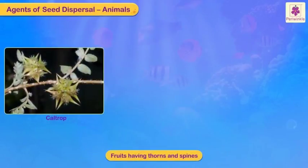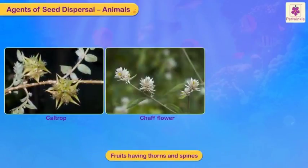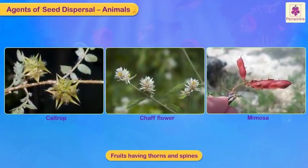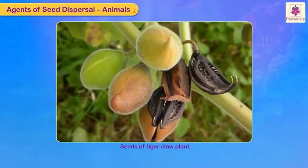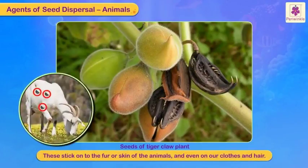The fruits of caltrop, shaftflower, and mimosa have thorns and spines. The seeds of the tiger claw plant have hooked fruits. These stick onto the fur or skin of animals and even on our clothes and hair.